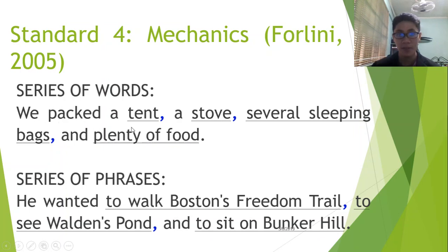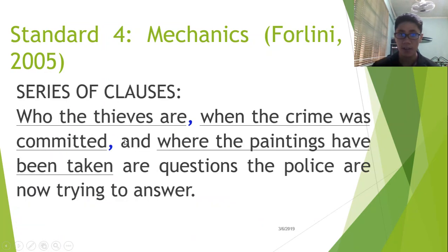If you're enumerating a series of words, we have one, two, three, four items. We only use three commas, as you can see here. Same goes for phrases and clauses. So, these are indirect questions. Notice the order. Instead of who are the thieves, instead of when was the crime committed, where have the paintings been taken, we use this order. Who the thieves are, when the crime was committed, and where the paintings have been taken. Notice the difference between direct questions and indirect questions.